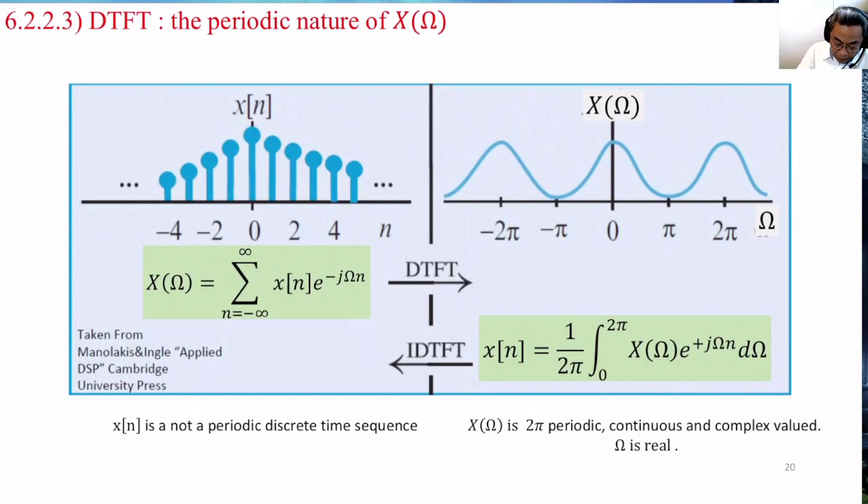This is 6.2.2.3. We are going to show you that X(Ω), the DTFT of the aperiodic sequence, is periodic with 2π period.